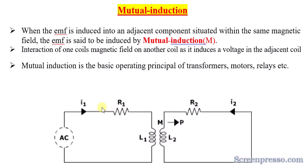As I mentioned in the last session on self-induction, we only considered one circuitry. But here in mutual induction, both circuits are required because it is mutual — mutual means two circuits are required. So please consider both of these two circuits while defining mutual induction.